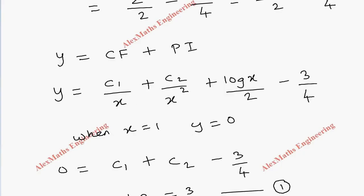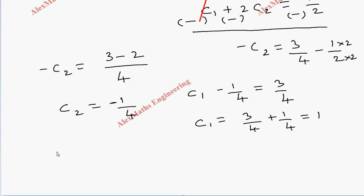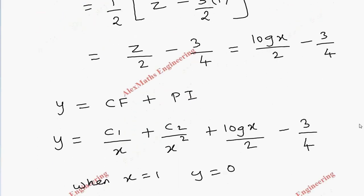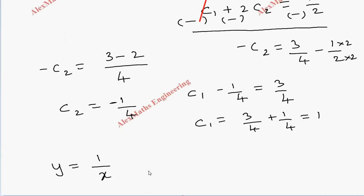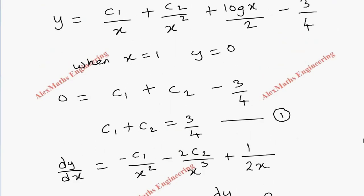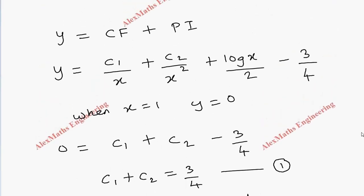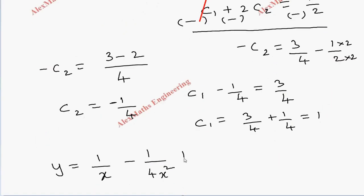Substituting C1 equals 1 and C2 equals minus 1/4 into the general solution, the final particular solution is: y equals 1/x minus 1/(4x squared) plus log x over 2 minus 3/4.